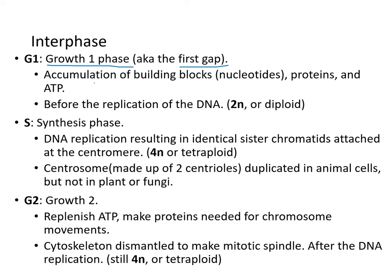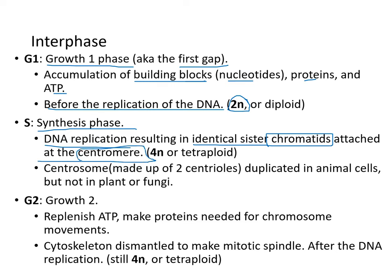During G1, the first gap phase, accumulation of building blocks occurs — nucleotides, proteins, and ATP — and the cell is still diploid (2n). During S phase, DNA replication occurs and identical sister chromatids are attached to each other at the centromere. At this point the cell is 4n, or tetraploid. The centrosome, made up of two centrioles, is duplicated in animal cells — centrosomes are not present in plant or fungal cells.